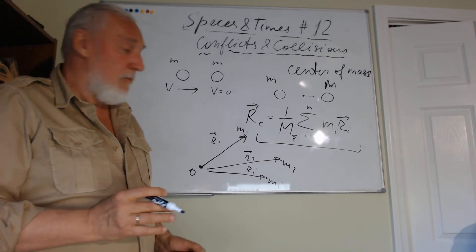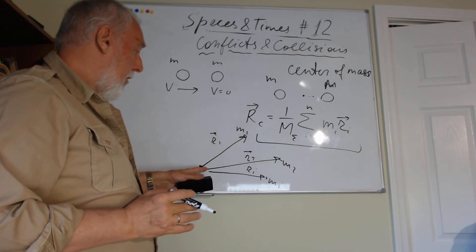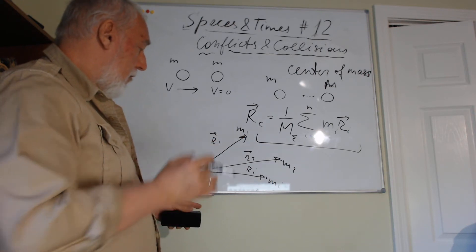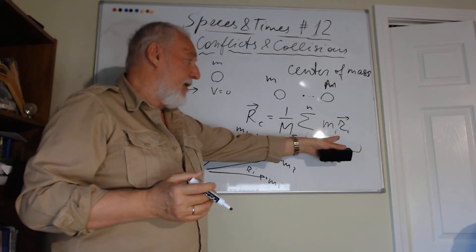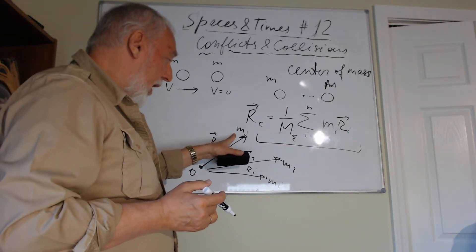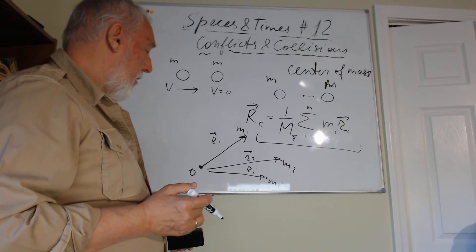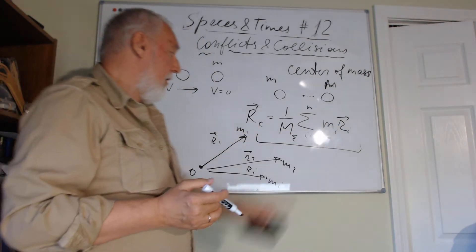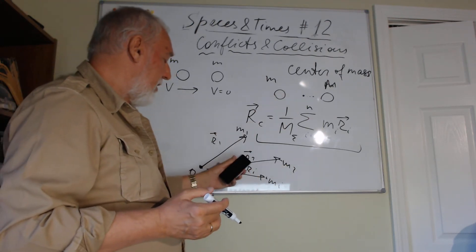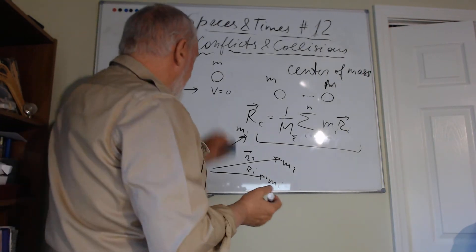Student asks: so m1 times r1 — if m1 is really far, r1 is going to be really long but we still multiply by m1? Correct — it goes in the same direction as r1 but scaled by m1. So m1 times r1 goes the same direction as r1 but m1 times, and so on for m2 times r2.